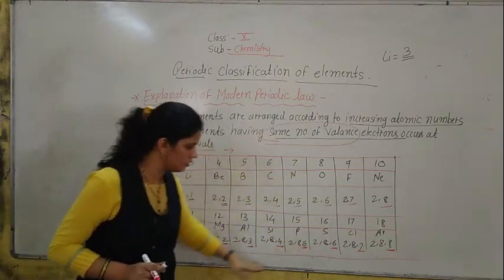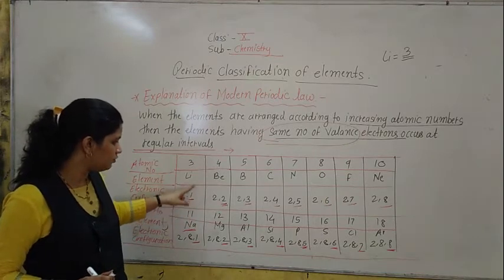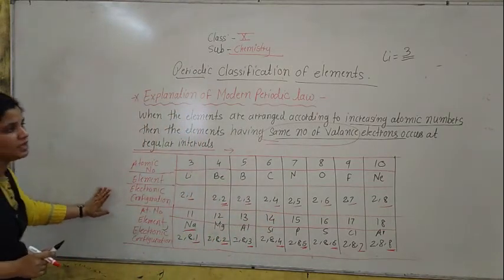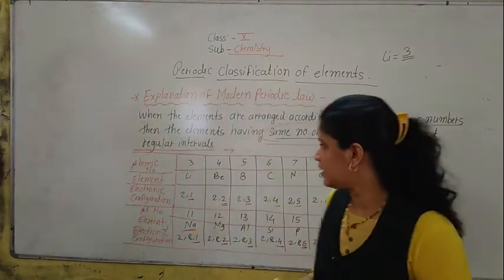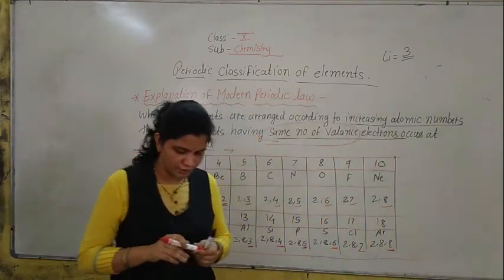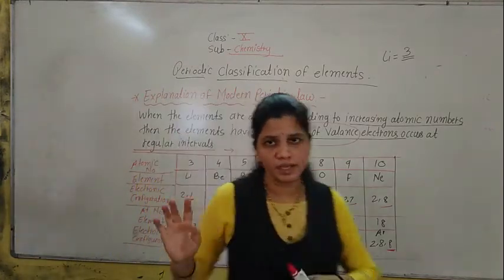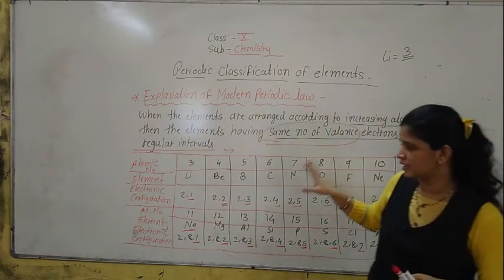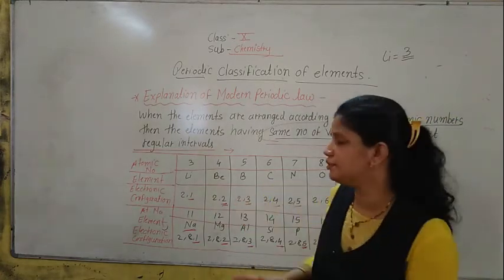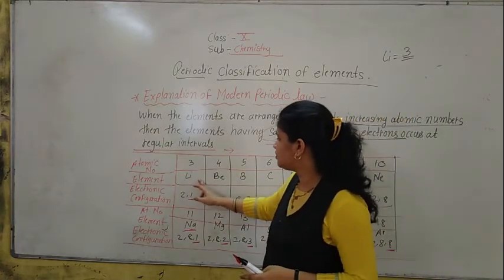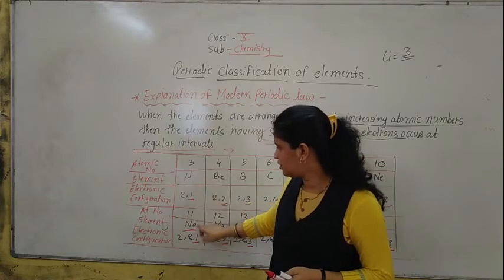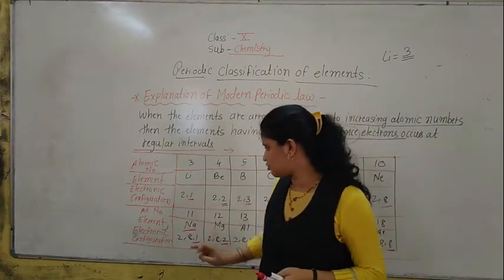From lithium to neon, then again sodium to argon — after a regular interval, the valence electrons are the same. And if you see the physical and chemical properties, they are also similar. This point is very important. Write down all this information in your chemistry notebook. Once again — in the short explanation of the modern periodic table, elements are given a particular position because after some intervals, the valence electrons are the same according to the increasing atomic number. So lithium and sodium have similar physical and chemical properties, and the same valence electrons.